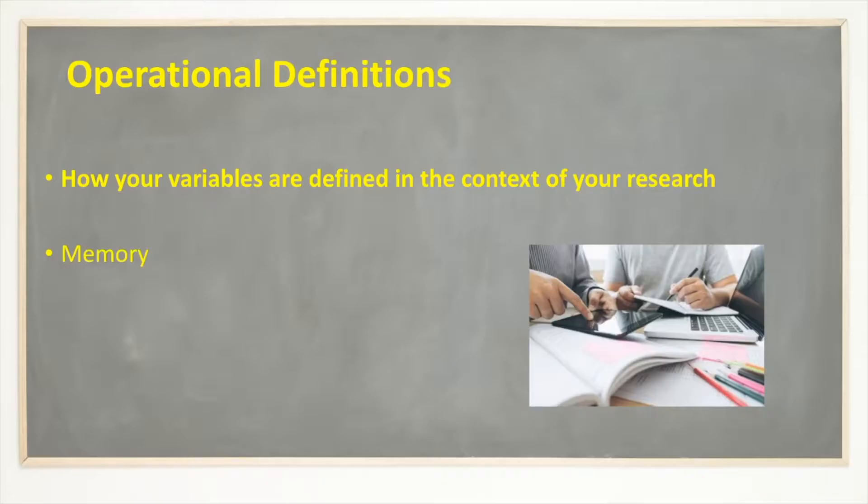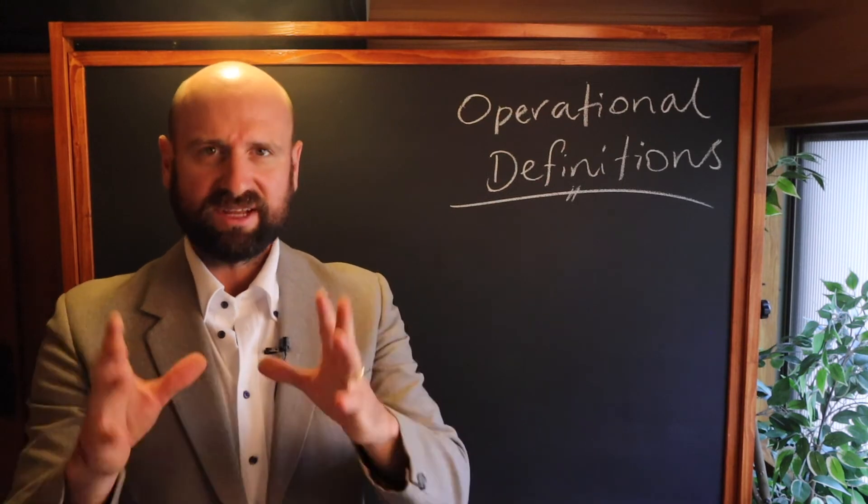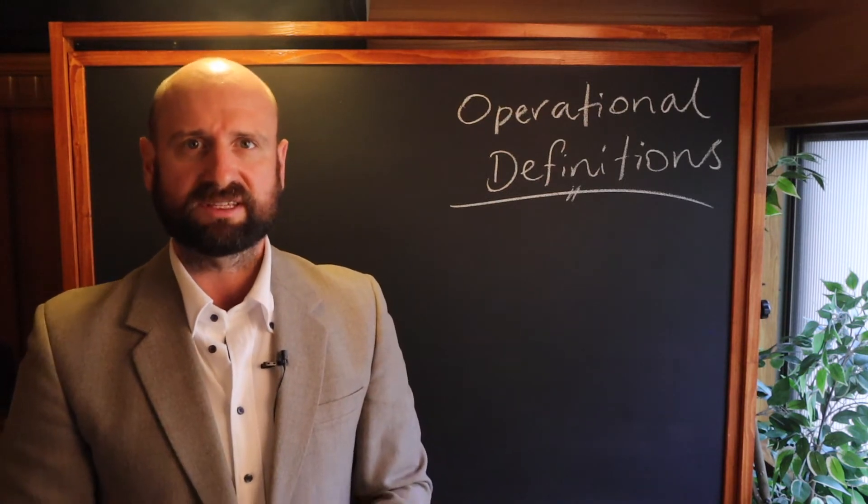So when we study things like memory or schema, stereotypes, mood, comprehension, these are really broad, vague, general. And so we have to have very specific definitions of these things.